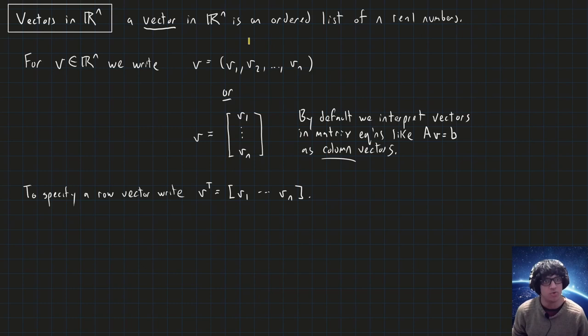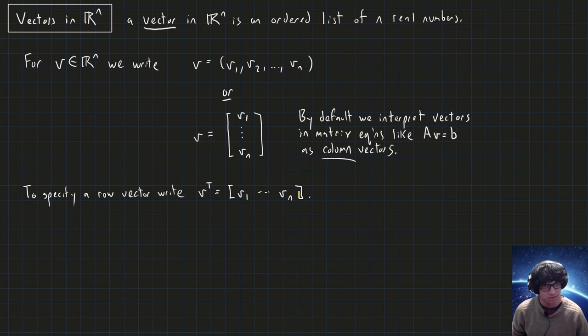So those are the two ways we can write a vector. Sometimes in matrix equations we really do want a row vector — horizontal like this. We just have to specify V transpose, and then we'll get a row vector version of V.